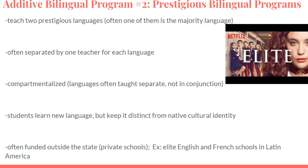These programs are often funded outside the state spectrum, so they tend to be private schools. Examples include elite English and French schools in Latin America, where students learn Spanish as their native language and also French or English in school. The general goal is that students will study at universities in the United States, France, or Europe, and that the prestigious language will give them eligibility as international students and more economic opportunities when working for transnational companies or abroad.